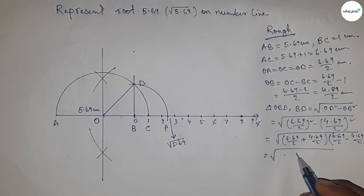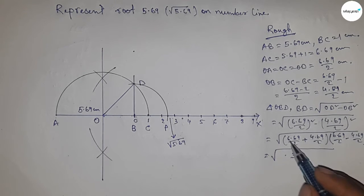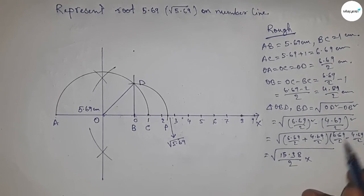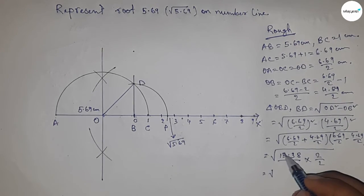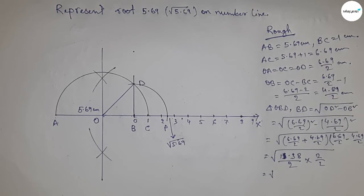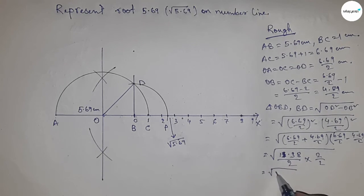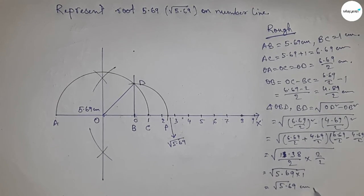So from these, so this is 8 and this is 3 and carry, so this is 13.38 by 2 into, so this is 11.11 point 38 by 2 into 2 by 2, so this is root 5.69 centimeter.